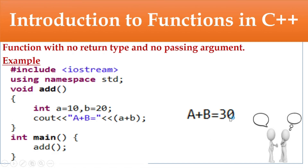This program is an example for function with no return type and no passing arguments. The function starts with void, followed by function name 'add' and no passing arguments. Inside the function, I declare integer a = 10 and b = 20, then print using cout: a + b = 30. In the main method, I call the function by name 'add' with no arguments, and it prints the output a + b = 30.